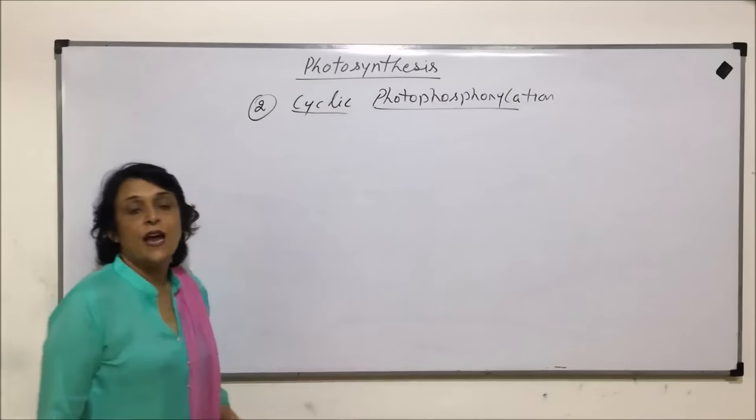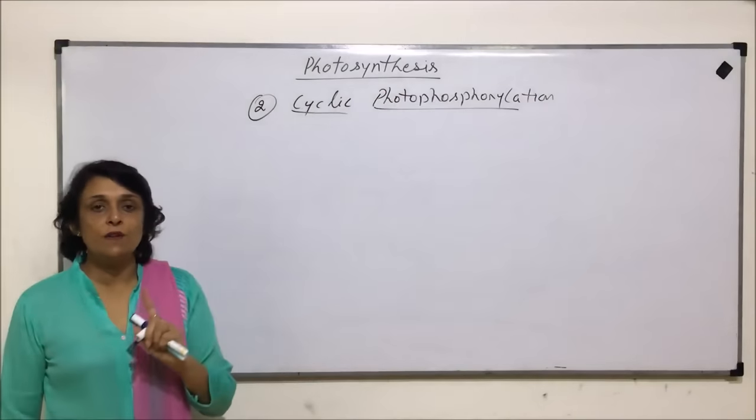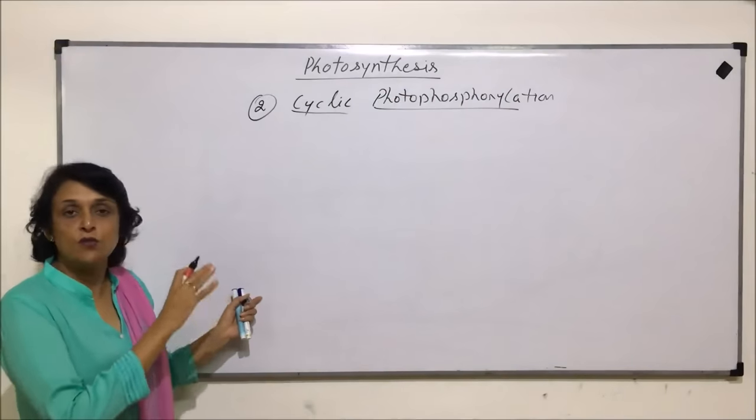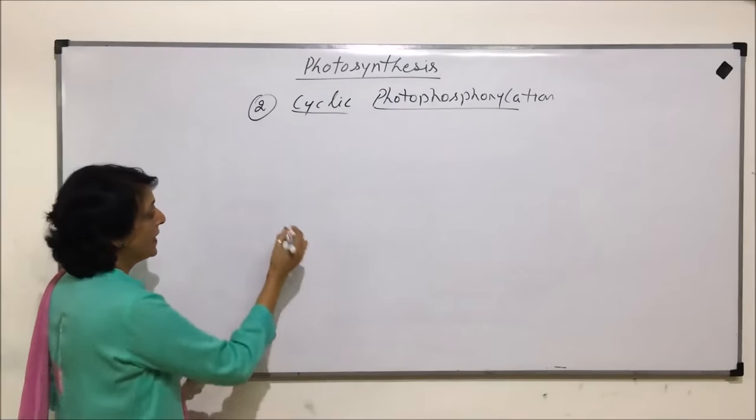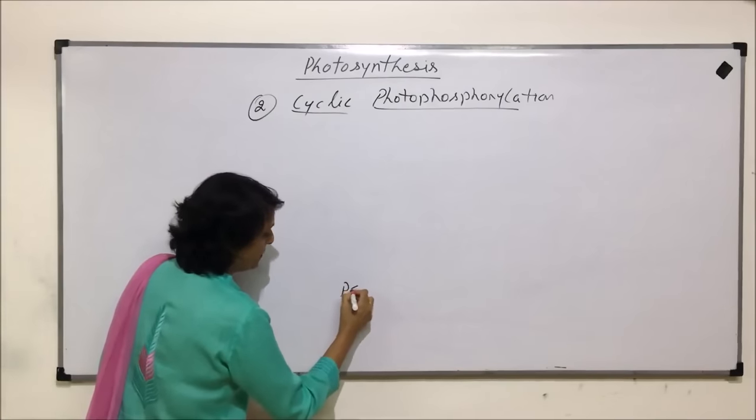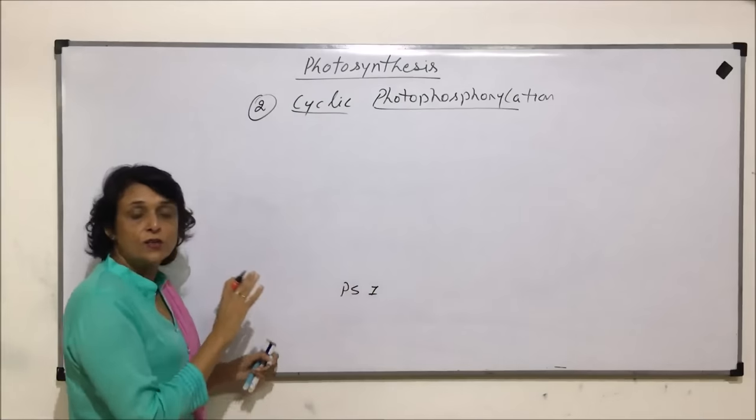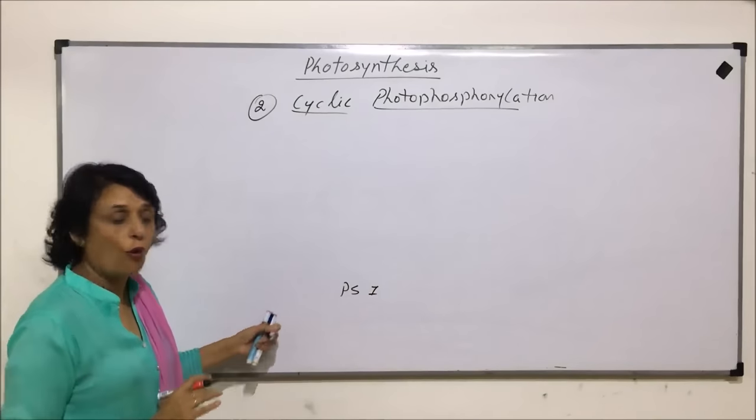Cyclic photophosphorylation starts or involves only one photosystem. So, let us first draw the flowchart, how exactly it works and then we will write down a few important things. It starts with PS1 and that is the only photosystem which is involved in this.